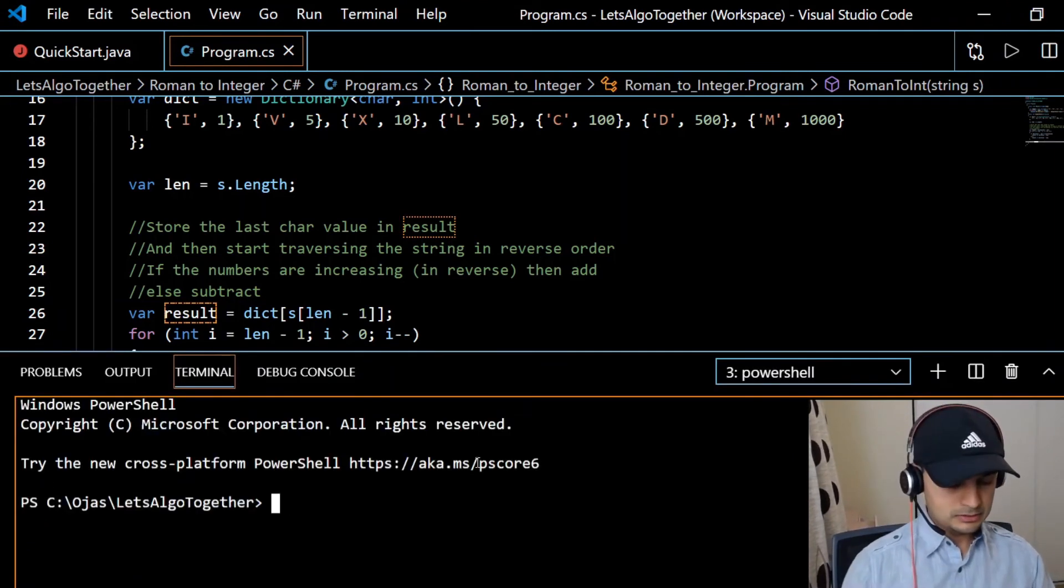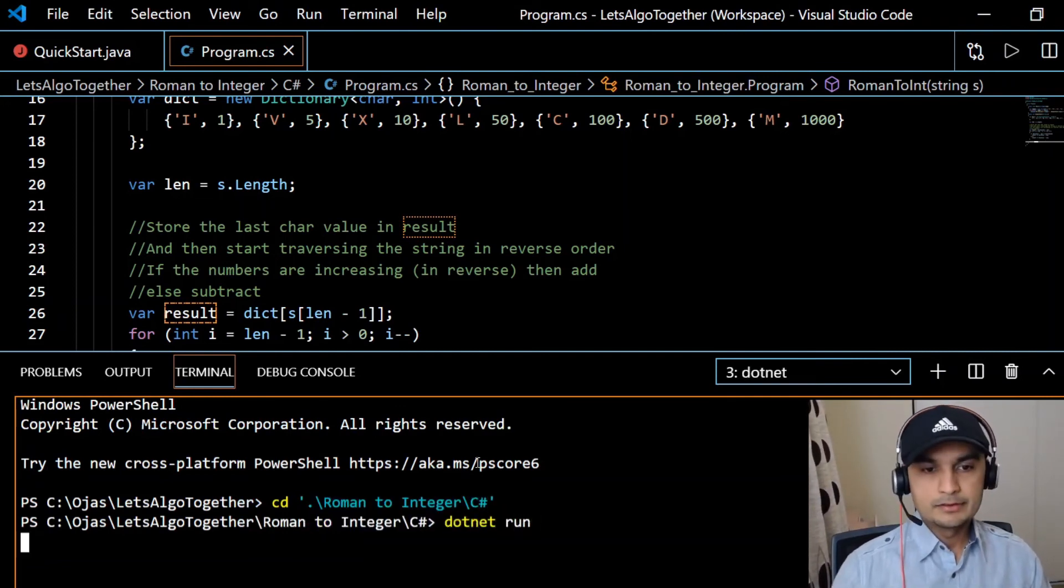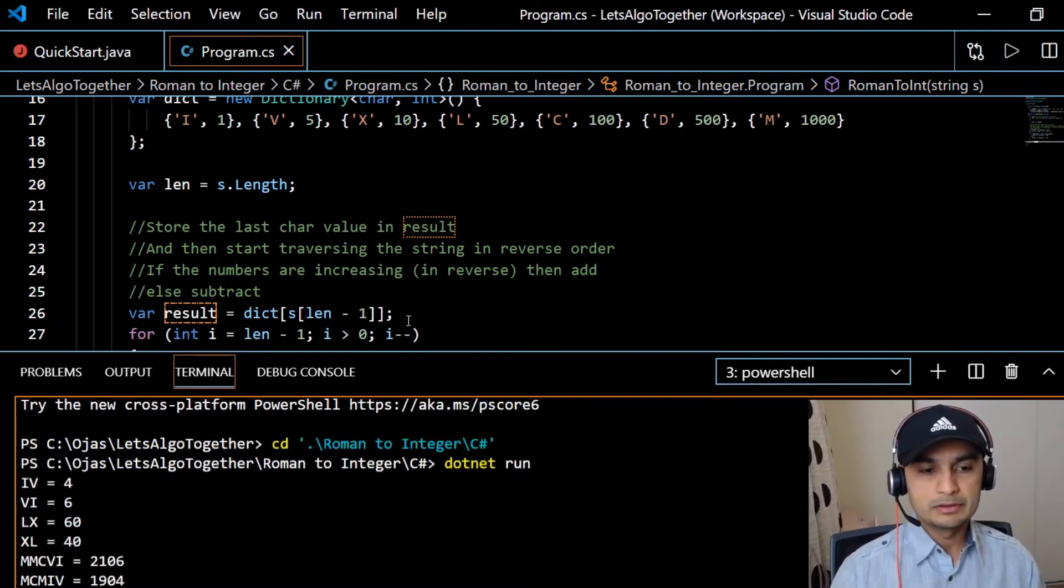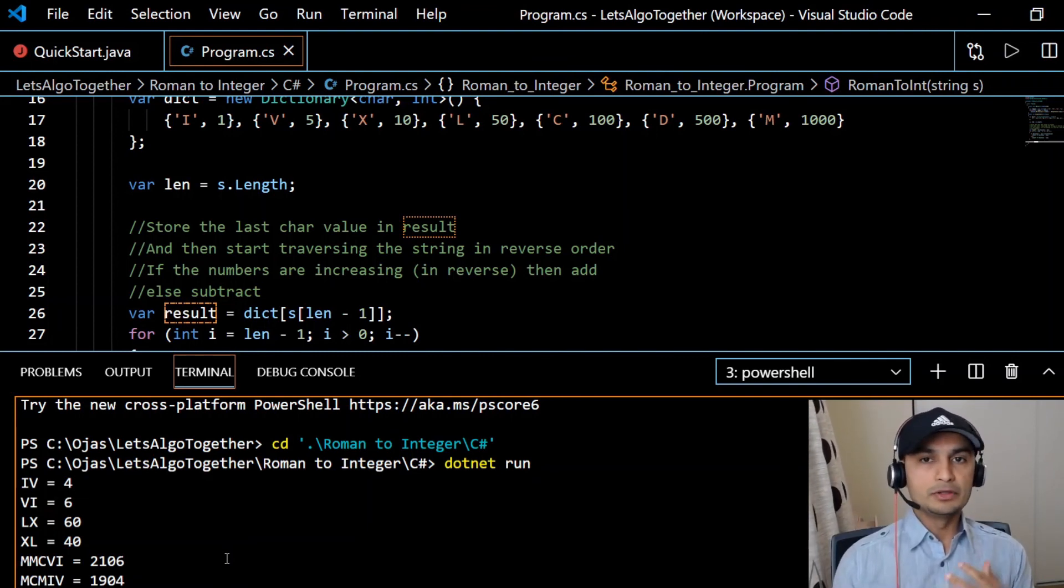And I already have few inputs supplied over here, so all we discussed on the whiteboard. As expected, it runs fine. So there you go, that's roman to integer code. If you guys like the video, if you guys learned something new, give me thumbs up on the video. Let me know your feedback, suggestion in the comments, and subscribe for more videos. Thank you guys.